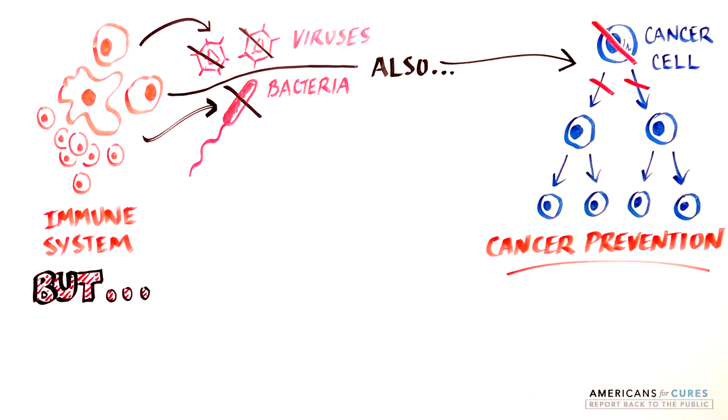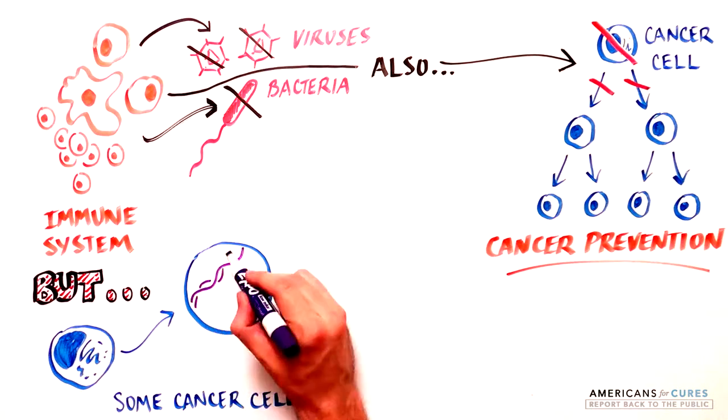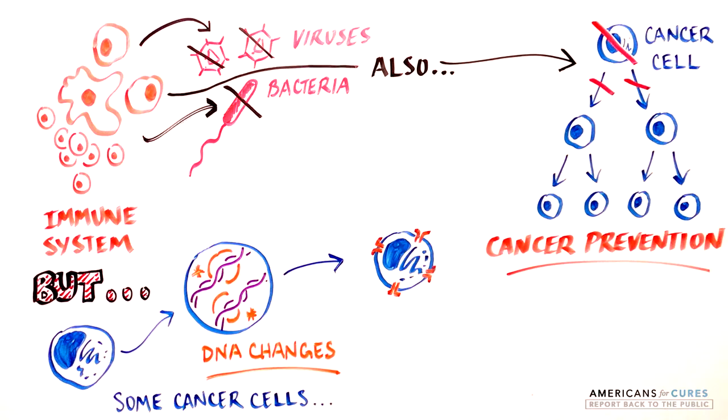However, some cancer cells acquire changes in their DNA sequence and begin to produce high levels of proteins that render these cells invisible to the immune system.